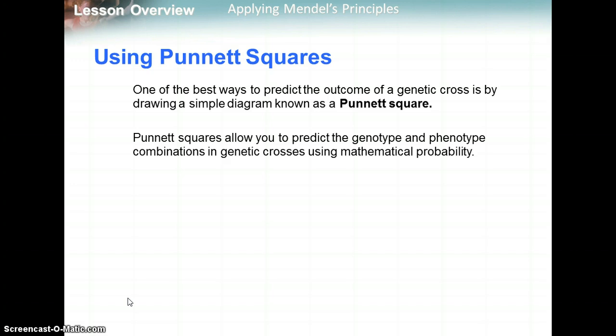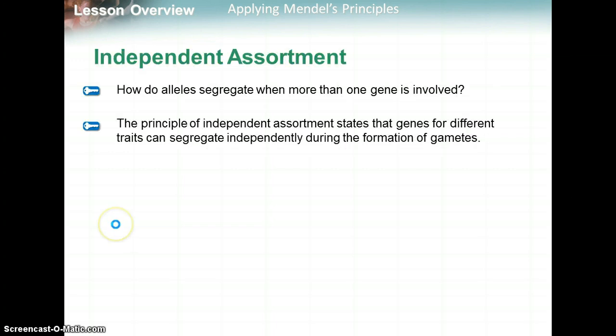A Punnett square is a very good tool for genetic crosses. It can help you solve for the mathematical probability of different allele combinations for genotype and phenotype. Independent assortment: how do alleles segregate when more than one gene is involved? The principle of independent assortment states that genes for different traits can segregate independently during the formation of gametes, meaning one trait doesn't affect another.